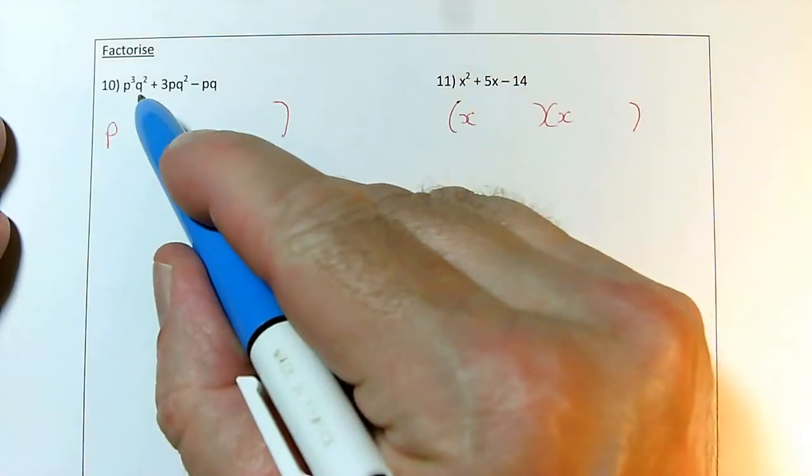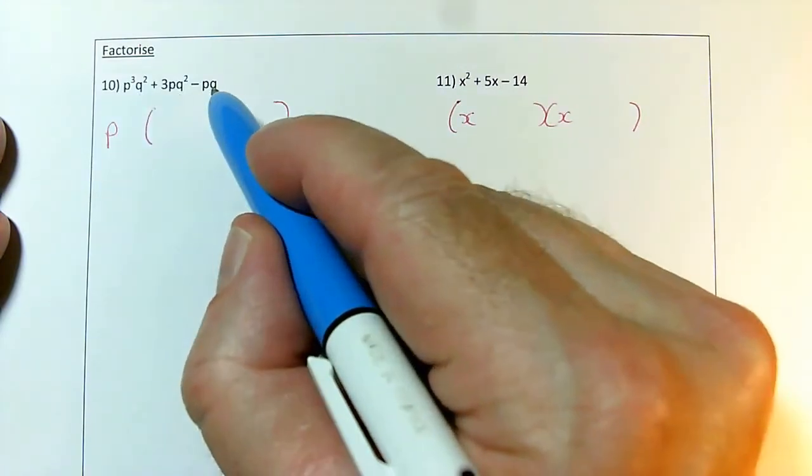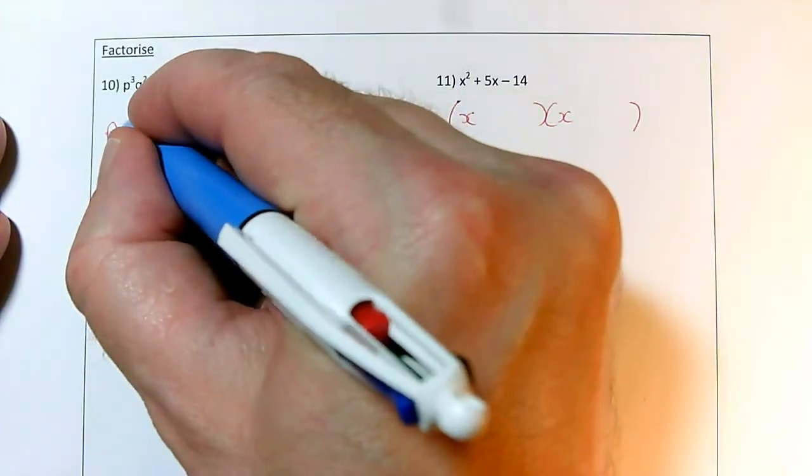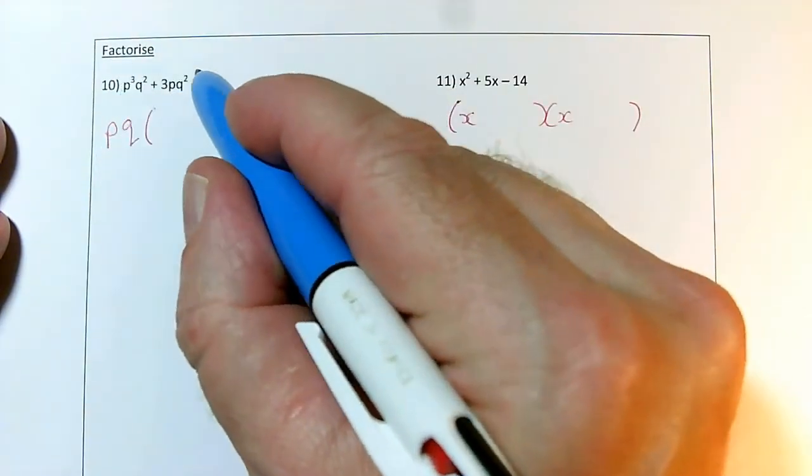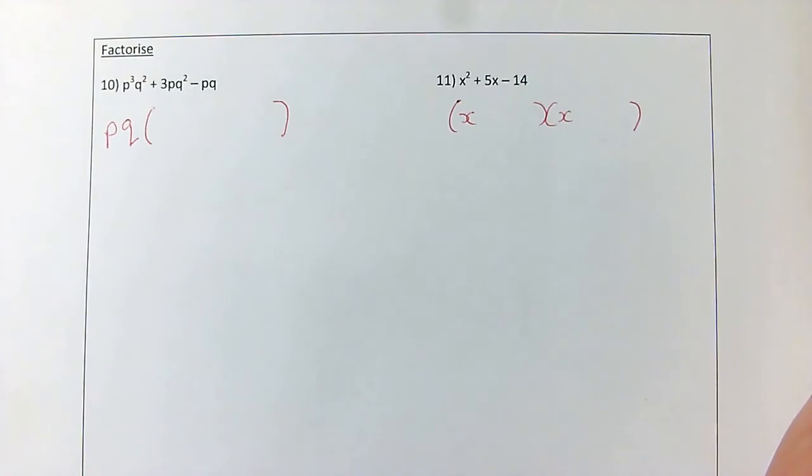And the same thing with q. I've got q squareds, q squareds again, and qs. So the highest power of q is q, which means the common factor for all of these terms, they can all be divided by pq, but not by anything with more in than that.